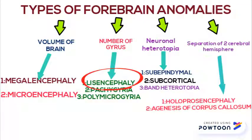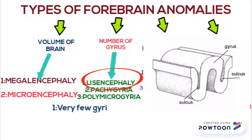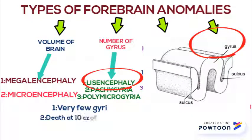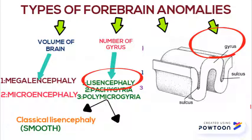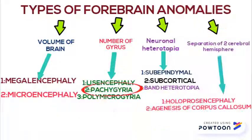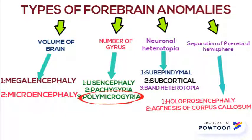Lissencephaly means very few gyri in the brain. Gyri are the outpocketings found in our brain, and lissencephaly usually causes respiratory problems around age 10. Lissencephaly is of two types: the classical type, which is smooth, and the cobblestone type. Pachygyria means very few but thick gyri.